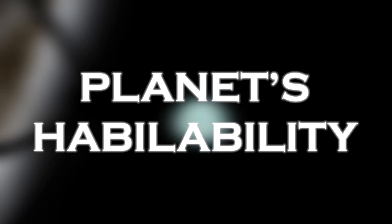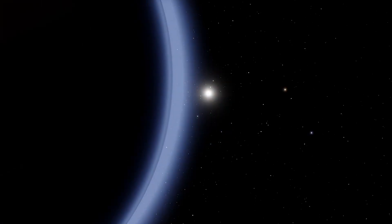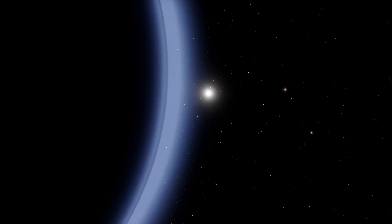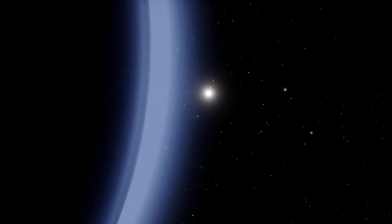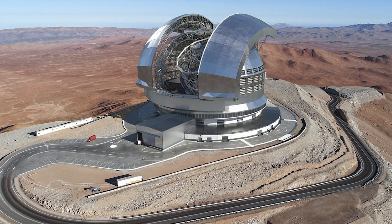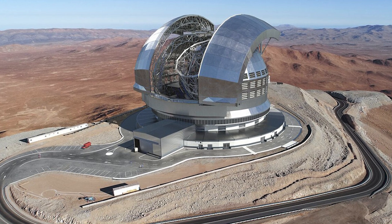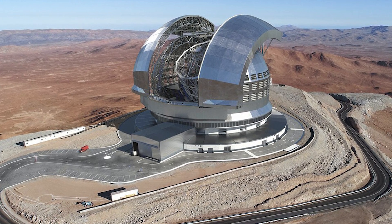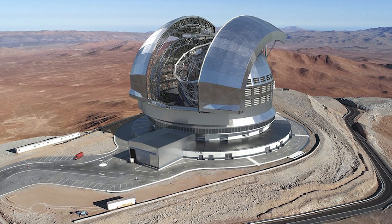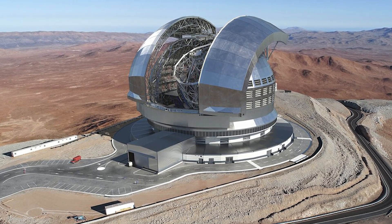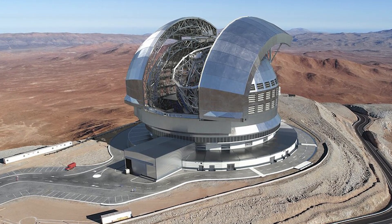It is important to keep in mind that the JWST cannot explore all potential habitable worlds, as it has limited capabilities and can only observe some of the exoplanets closest to Earth. Therefore, astronomers are turning to ground-based observatories such as the Extremely Large Telescope, the ELT, which is expected to become operational in 2028, and allow for a deeper investigation of the atmospheric structure of distant exoplanets.